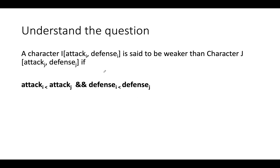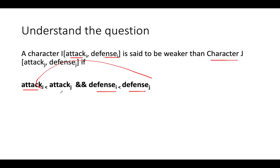We are given an array of characters and each character has two attributes: attack value and defense value. A character i is said to be weaker than character j if both these conditions are met: the attack of i is less than attack of j, and the defense of i is less than defense of j. Remember those conditions and let's walk through a few test cases to understand the algorithm.